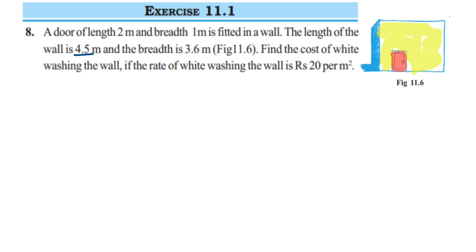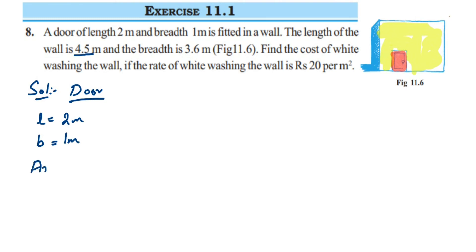Let's start with the solution. First, we find the area of the door. The door has length = 2 meters and breadth = 1 meter. Since the door is in the shape of a rectangle, area of door = length × breadth = 2 × 1 = 2 meter square.